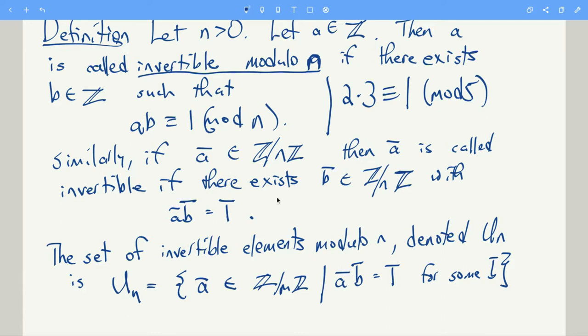So in this example, we'd also say that the congruence class of 2 is invertible. Congruence class of 2 is invertible because 2 bar times 3 bar, that's just 6 bar, and the congruence class of 6 is the same as the congruence class of 1.